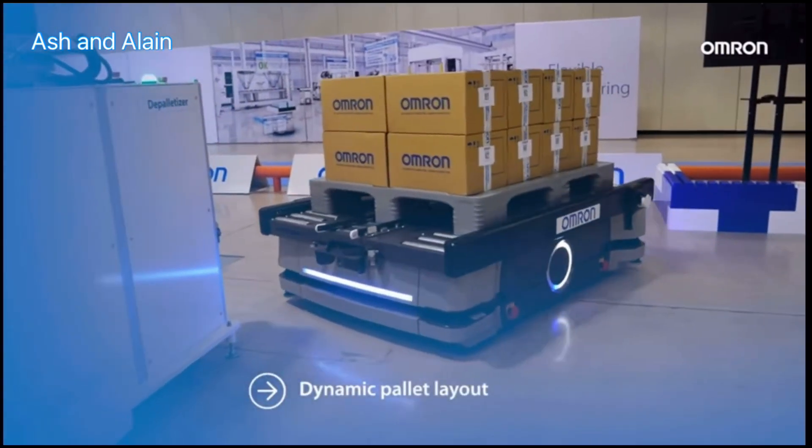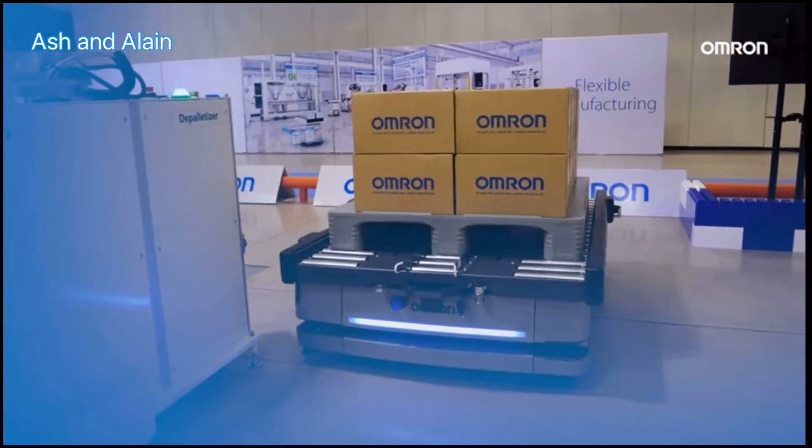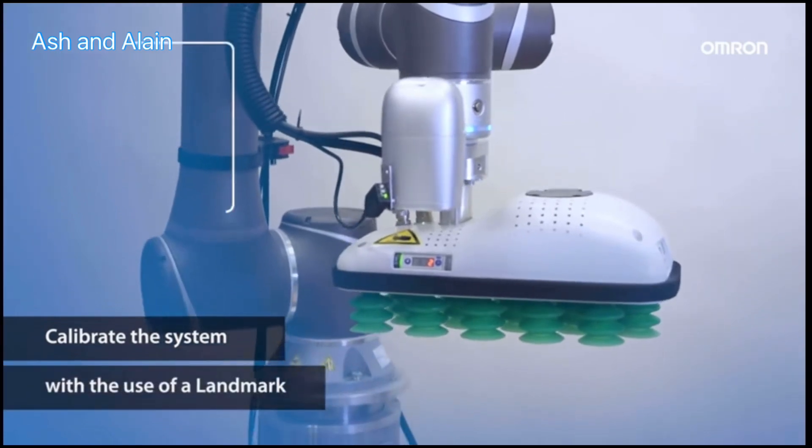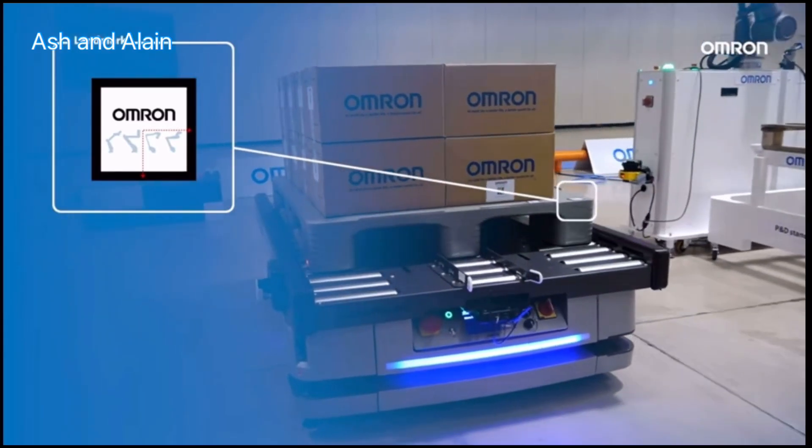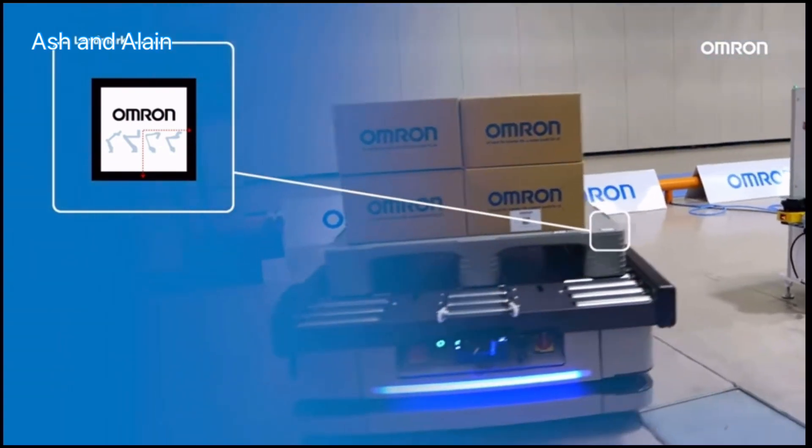If the pallet layout is dynamic, for instance with a mobile robot, you can calibrate the system with the use of a landmark. The COBA detects it with their optional built-in vision camera and picks the objects relative to the landmark.